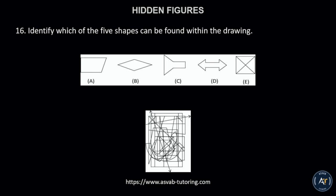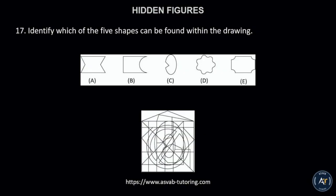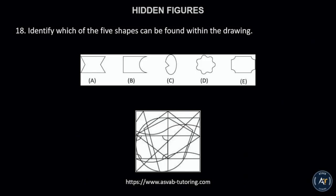Number 16. Identify which of the five shapes can be found within the drawing. The correct answer is letter E. Number 17. Identify which of the five shapes can be found within the drawing. The correct answer is letter C. Number 18. Identify which of the five shapes can be found within the drawing. The correct answer is letter E.